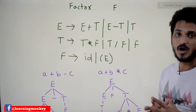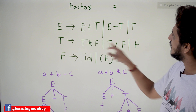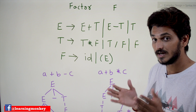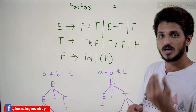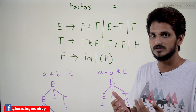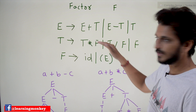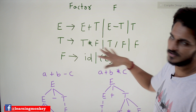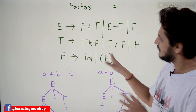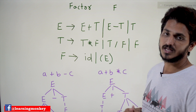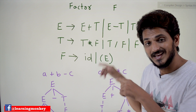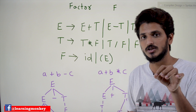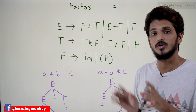This grammar is going to identify plus, minus, star, divided by, and brackets. Which one is having the highest precedence? Brackets has the highest precedence. After that, star and divided by have the same precedence, which is less than brackets. Plus and minus have the least precedence. You have to understand how they are maintaining the precedence and associativity here.